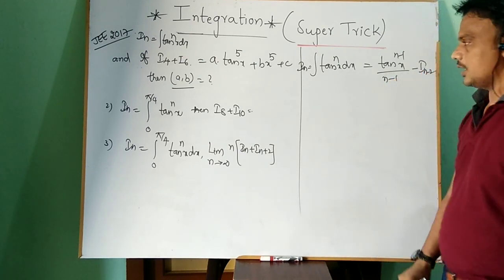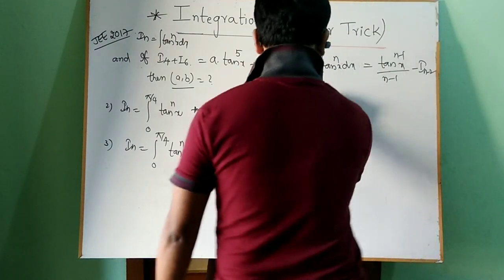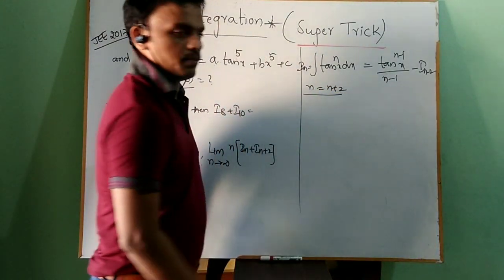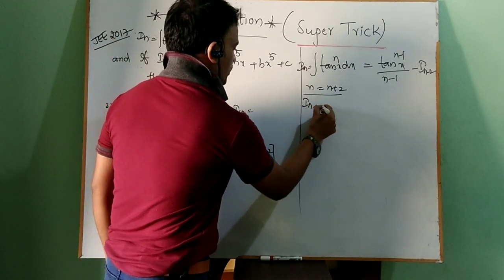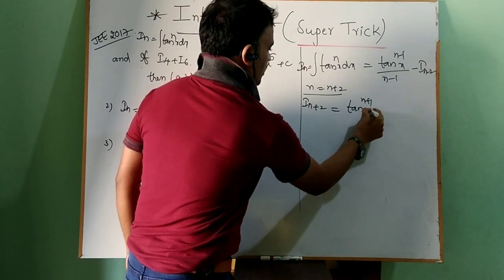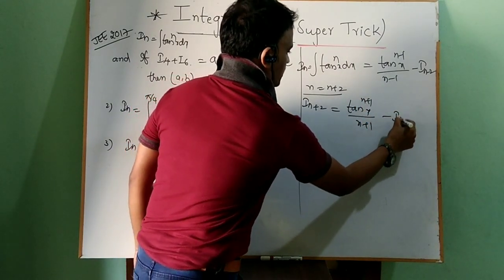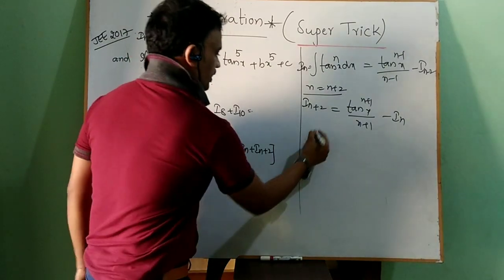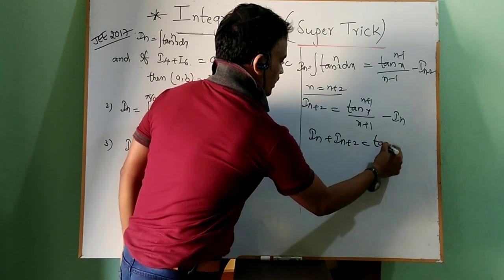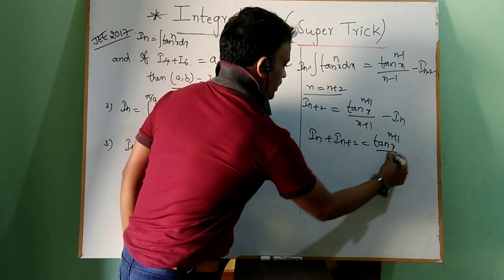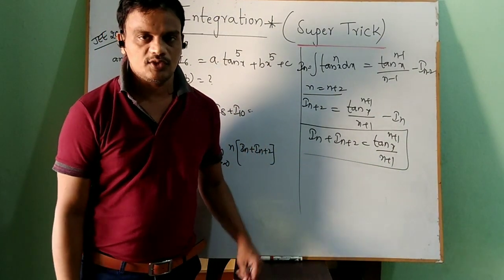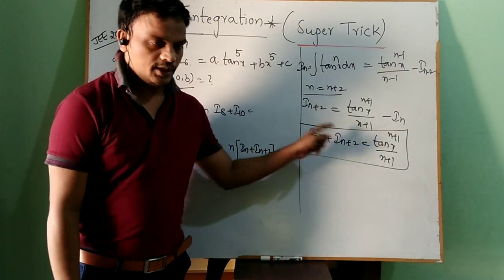From the reduction formula, just substitute n replaced by n+2. Then i_{n+2} = tan^{n+1}(x) / (n+1) minus i_n. Rearranging, we conclude that i_n + i_{n+2} = tan^{n+1}(x) / (n+1) + c. This is the shortcut — within 10 seconds you can solve these problems.